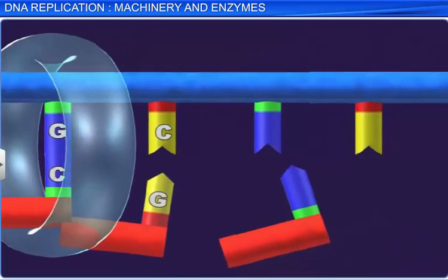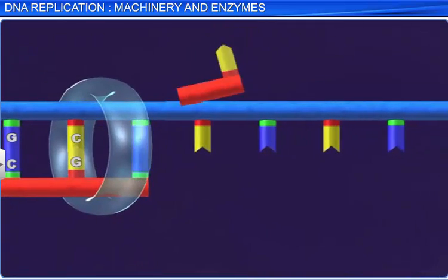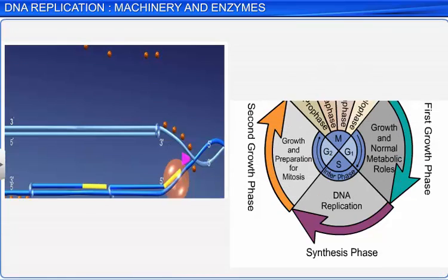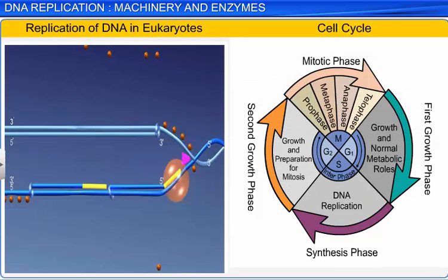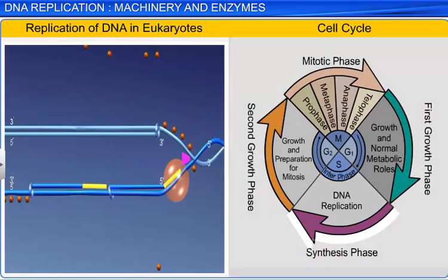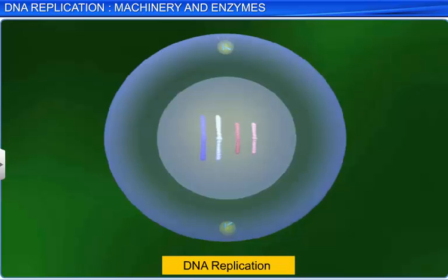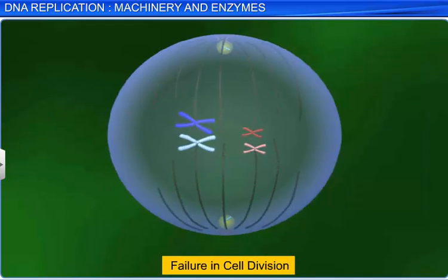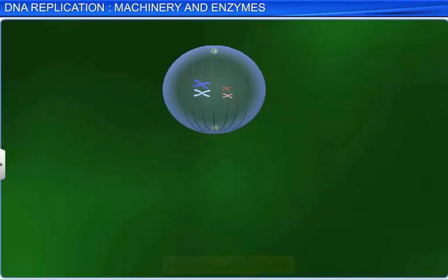However, scientists are still to understand all the aspects of DNA replication. Although it is a known fact that replication of DNA in eukaryotes takes place in the synthesis phase of the cell cycle. The cell cycle too needs to be coordinated with the replication process, or a chromosome anomaly may occur. For example, a failure in cell division after DNA replication results in an inheritance disorder known as polyploidy.